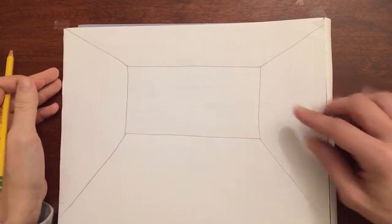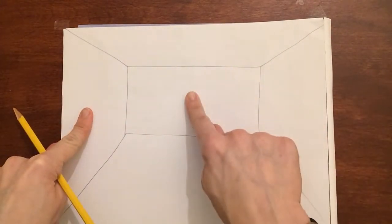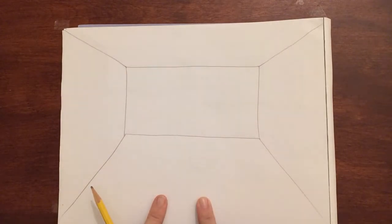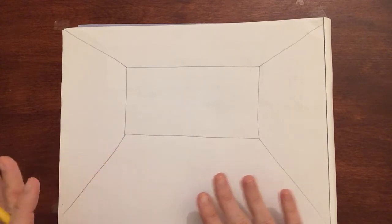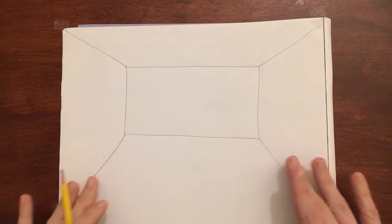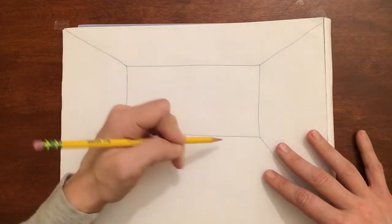So now you have a ceiling, two walls on the side, one wall in the back and your floor. And if you want to put objects or other things in your room, you will have to erase things if you get them overlapping these diagonals or this line here.